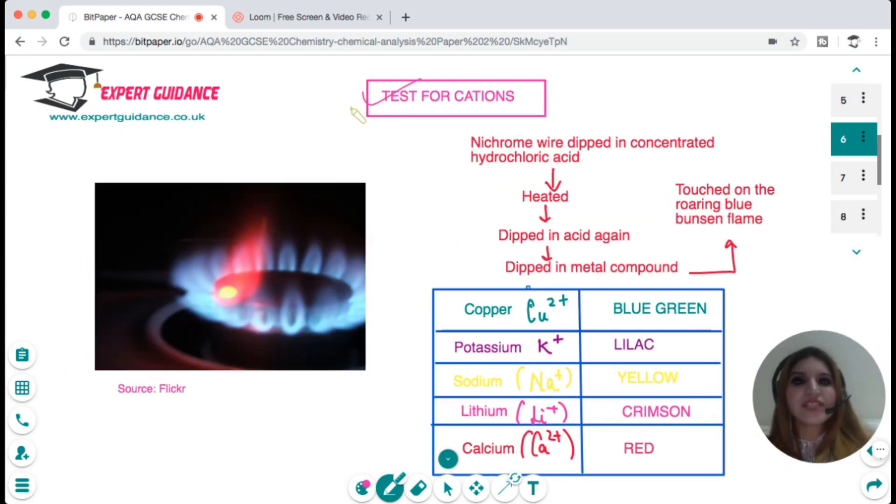Now we need to know what are the tests for cations, that is the metal ions. The first test that we do for any cation is a flame test. We take a nichrome wire and dip it in concentrated hydrochloric acid and heat it. We then again dip it in acid and then dip it in a metal compound, then touch it on a roaring blue flame of the Bunsen burner. Can you see there's a red color flame coming up? The color of the flame is characteristic of a metal.